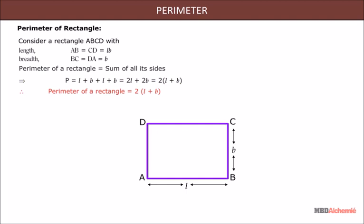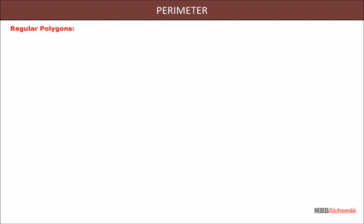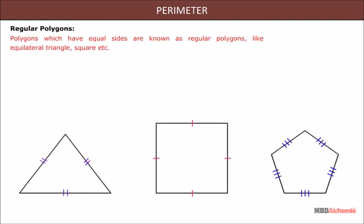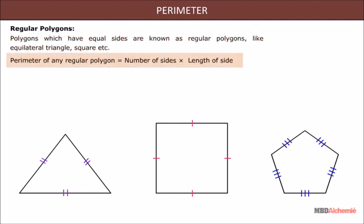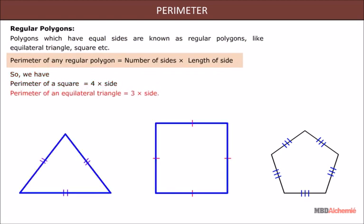Perimeter of a rectangle is twice the sum of length and breadth. Regular polygons are polygons which have equal sides, such as equilateral triangle, square, etc. Perimeter of any regular polygon equals number of sides multiplied by the length of one side. So, perimeter of a square is 4 times the side, perimeter of an equilateral triangle is 3 times the side, and perimeter of a regular pentagon is 5 times the side.